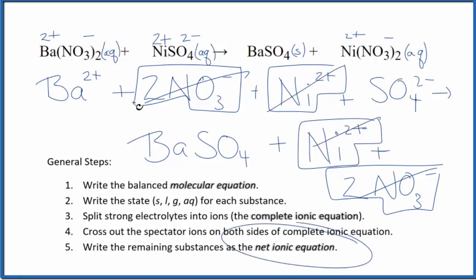What's left, that's the net ionic equation for Ba(NO3)2 plus NiSO4. Let me clean this up and write the states. We'll have our net ionic equation.